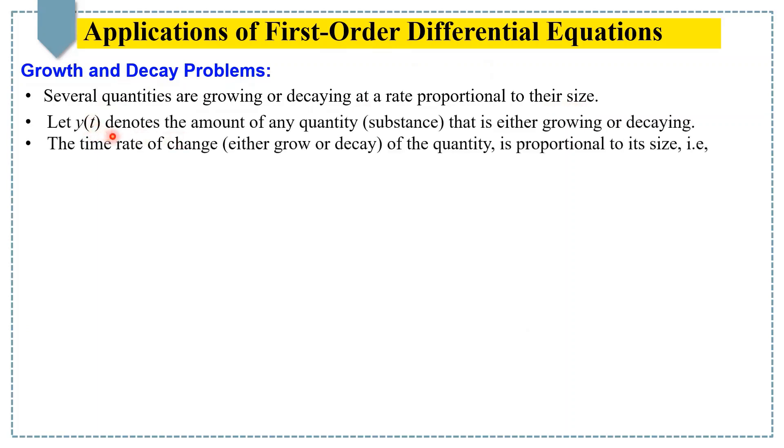Suppose y(t) denotes the amount of any quantity that is either growing or decaying. Then the time rate of change in that quantity, either in terms of growing or decaying, is proportional to its size. Mathematically, this can be written as dy/dt = ky. This is called a first-order differential equation because it gives a relationship between a function y and one or more of its derivatives.